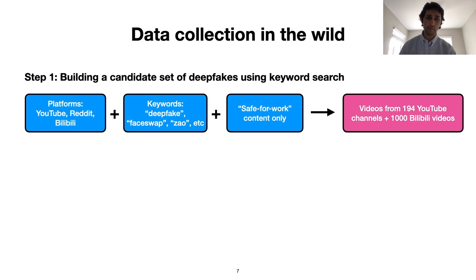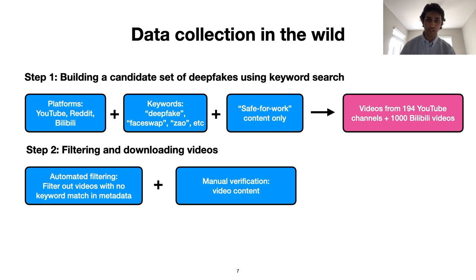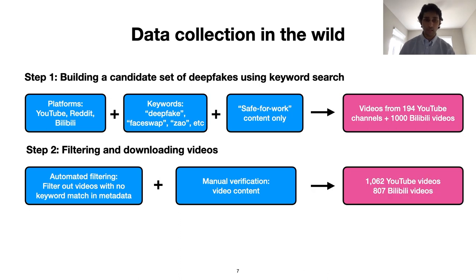In the second step, we used a combination of manual and automated techniques to verify whether the video contained face swap content. Some of these techniques included looking for keywords in video metadata and checking for obvious facial warping and distortion artifacts. After filtering out non-deepfake videos, we found over 1,800 deepfake videos, of which over 1,000 were from YouTube and around 800 from Bilibili.